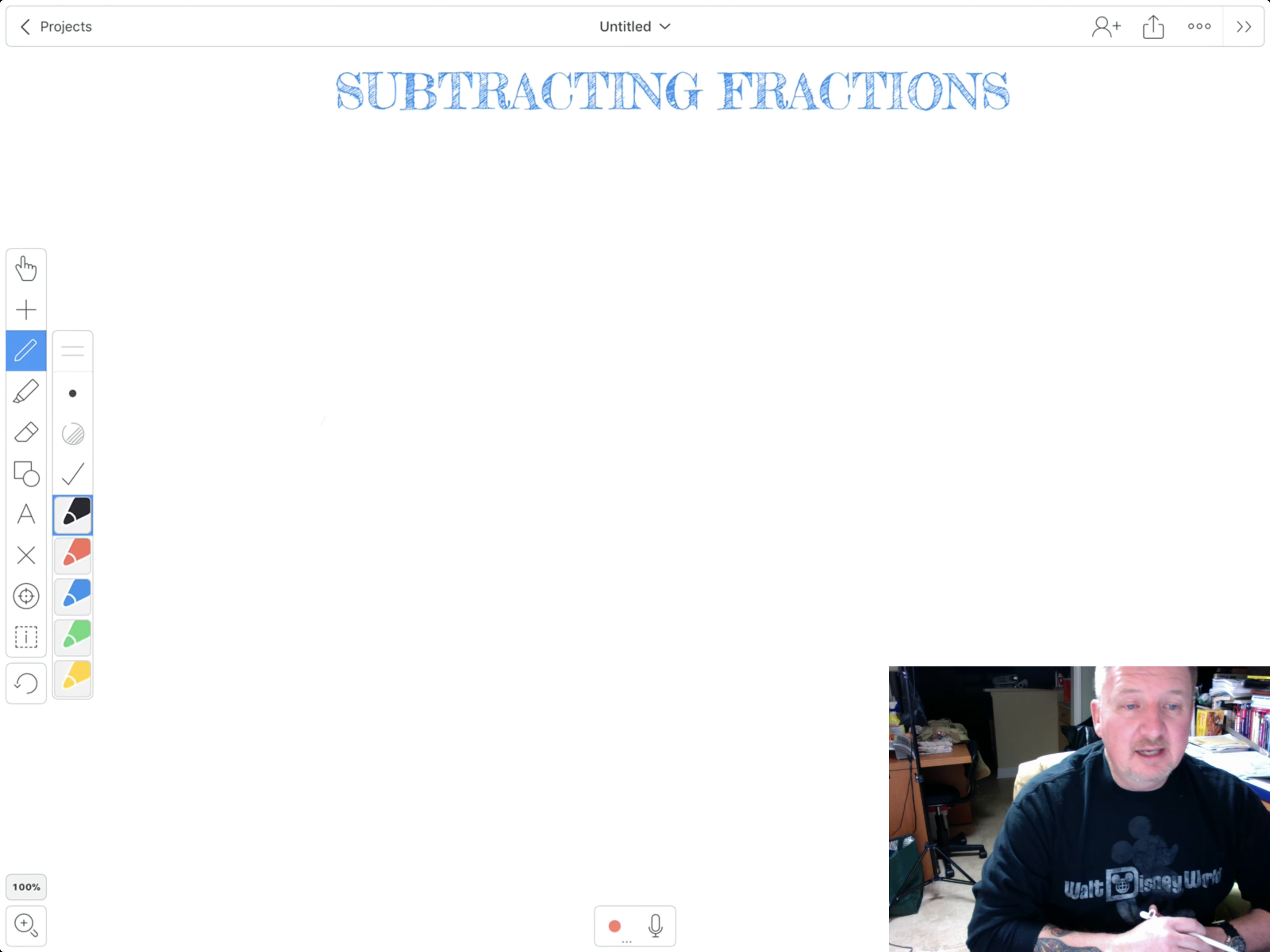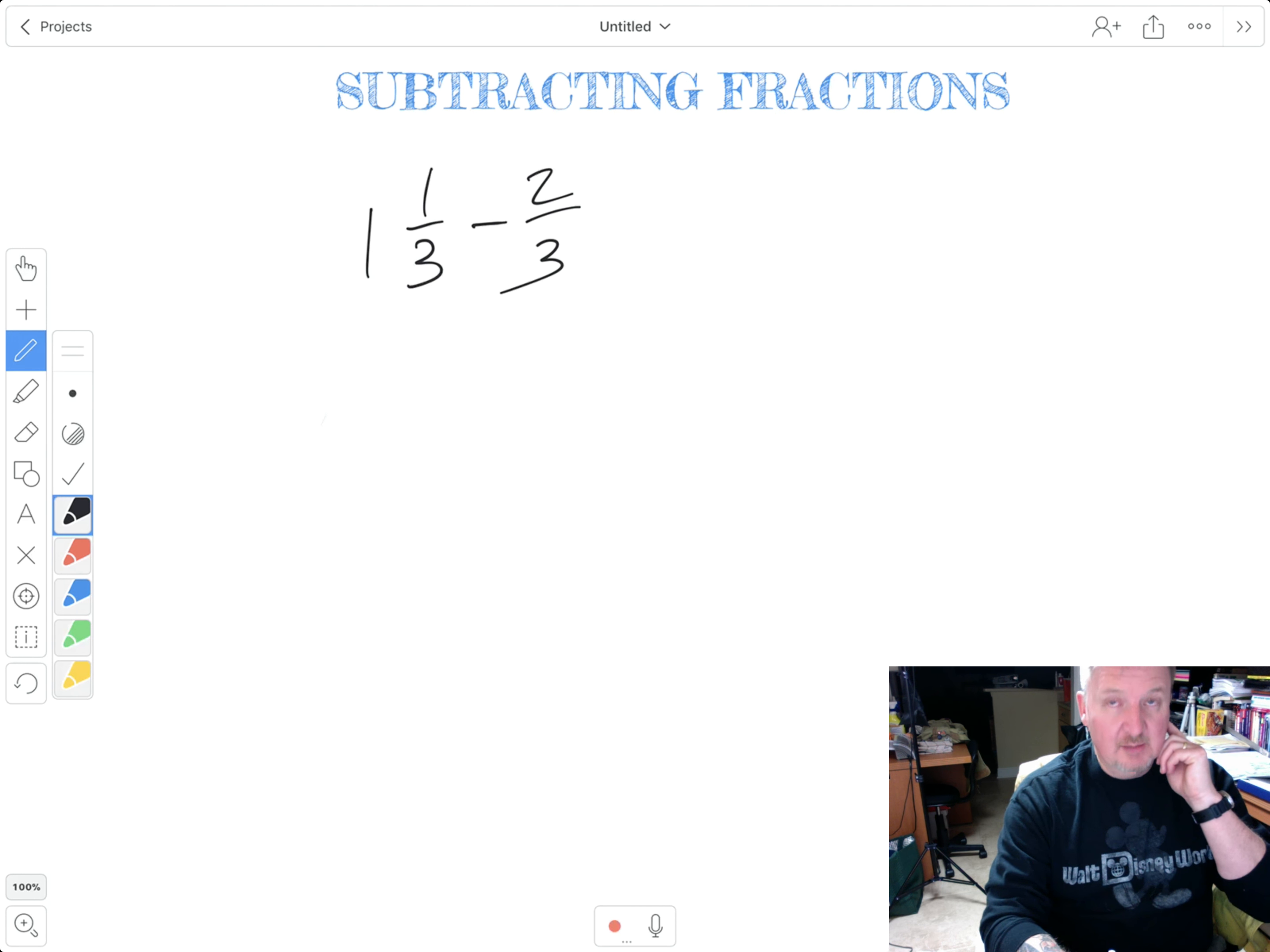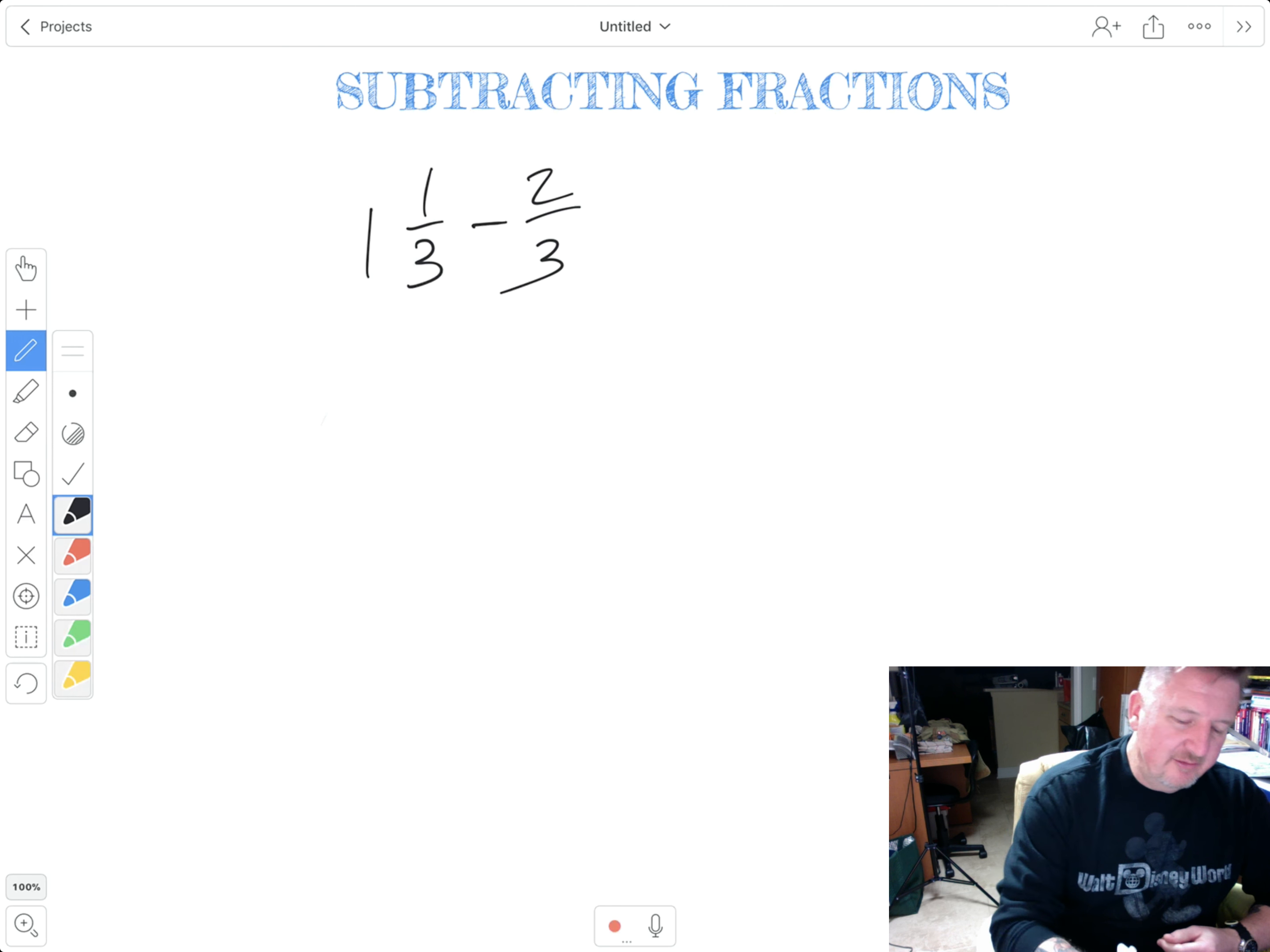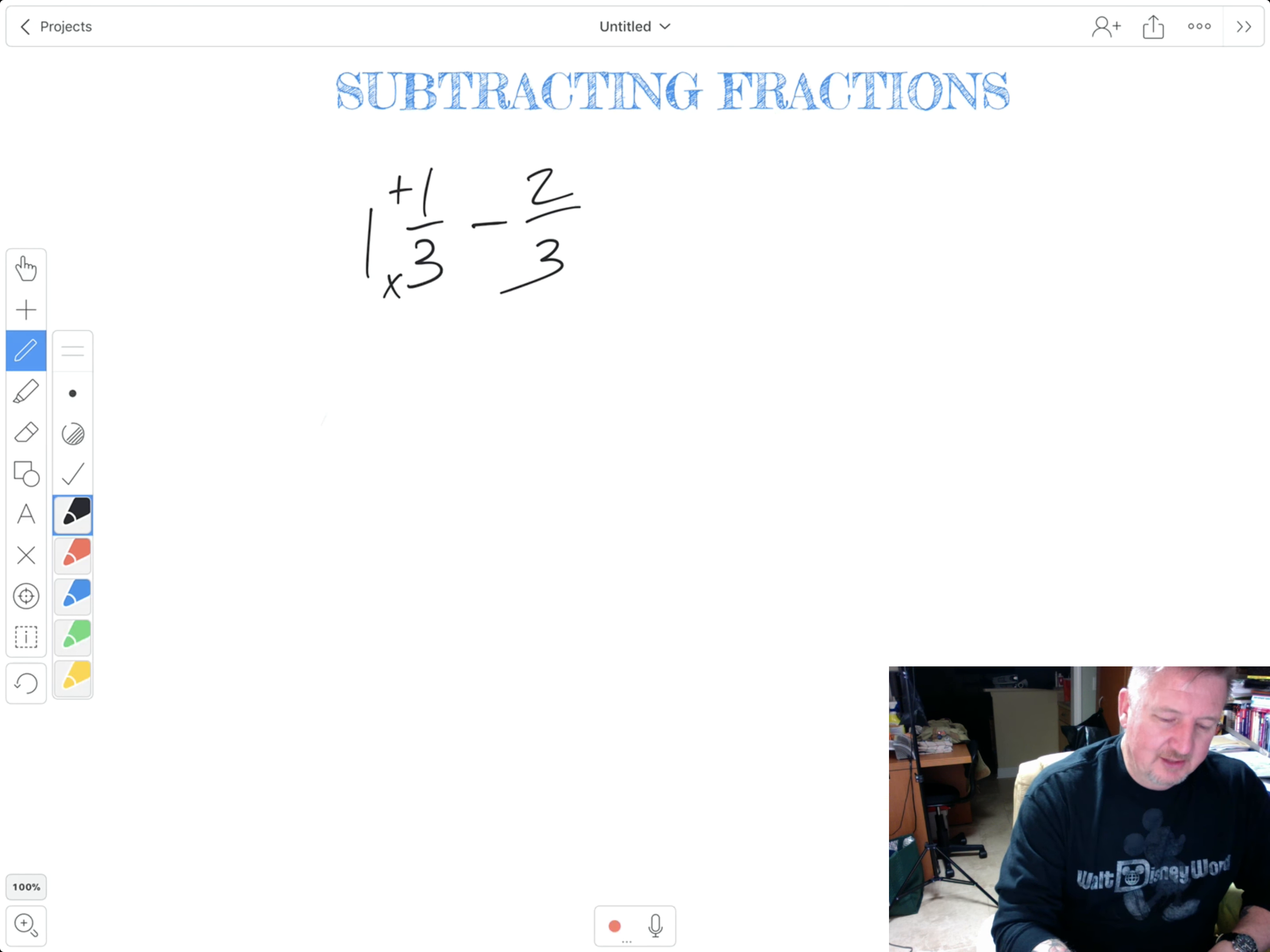Next example. So this is the advantage you get if you're turning into an improper fraction each time. Here I have the same denominator. So that's good. We want that. But I'm trying to subtract two from one. You can't really do that. So what I have to do is I have to borrow from this one. And it's not that difficult. But what I'm going to do instead is I'm just going to turn this whole thing into an improper fraction.